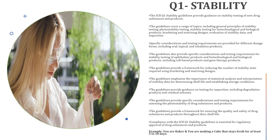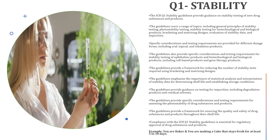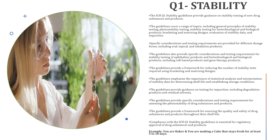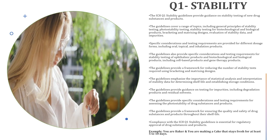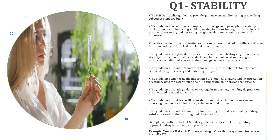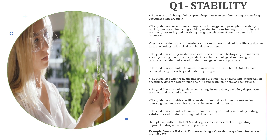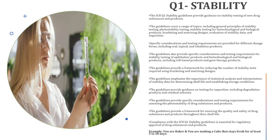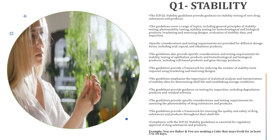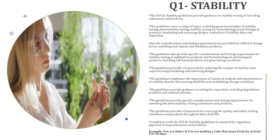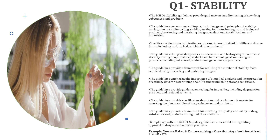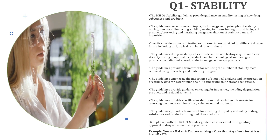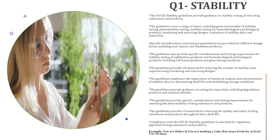You would subject your cakes to various conditions such as temperature, humidity, and light to see how long they remain fresh and tasty. The guidelines provide specific considerations and testing requirements for different types of cakes — such as a sponge cake, a fruit cake, a chocolate cake — which represent different dosage forms like syrups and injections. They also provide guidance on how to analyze and interpret your stability data to determine the shelf life and appropriate storage conditions.